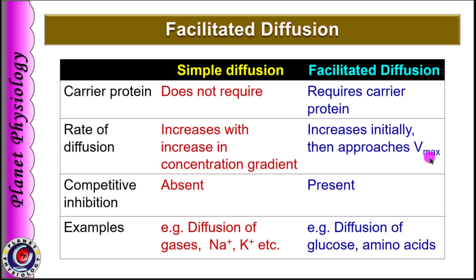Competitive inhibition is not present for simple diffusion, but can be seen in facilitated diffusion. Examples of simple diffusion include diffusion of gases and diffusion of sodium and potassium through their leak channels or voltage gated channels. For facilitated diffusion, examples are diffusion of glucose and amino acids.